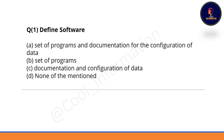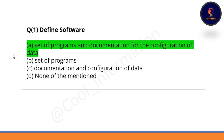Question 1: Define software. Option A is 'set of programs and documentation for the configuration of data,' Option B is 'set of programs,' Option C is 'documentation and configuration of data,' and Option D is 'none of the above.' Most of you will confuse Option A and B, but the correct answer is Option A, because software is a set of programs along with documentation and configuration of data.